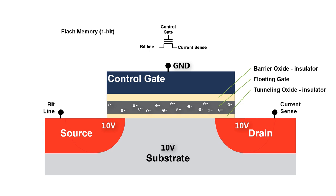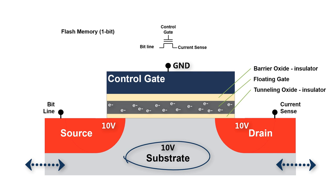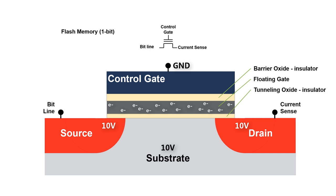Here are the voltages we'll apply to the cell to create the FN tunneling. Note that the whole substrate is raised to 10 volts, so all the memory cells in this whole block will get this 10 volts all at the same time. That is why this is called a flash memory — because it will flash erase the whole block with FN tunneling. All memory cells in this block will be erased back to a logic one level, whether they were already a logic one or were programmed to a logic zero.